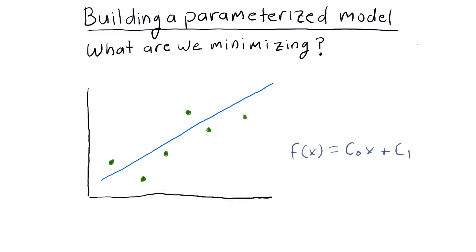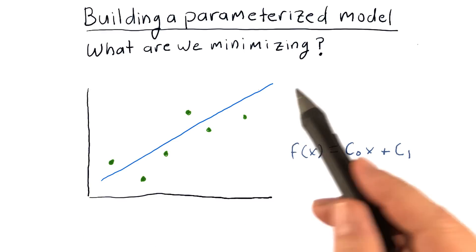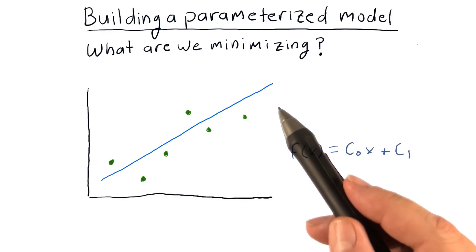So restating the problem, suppose we have our original data points here. And we're trying to discover the equation of a line that best fits those points. Suppose this blue line is a candidate line, and we want to evaluate it. Is this good or bad?